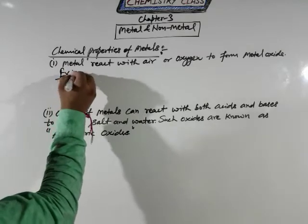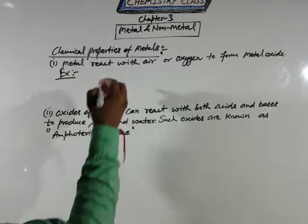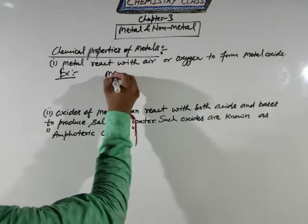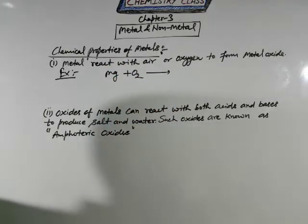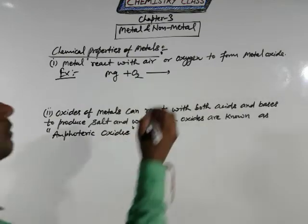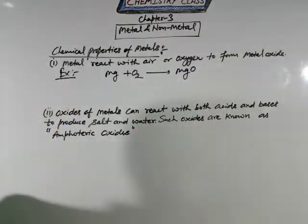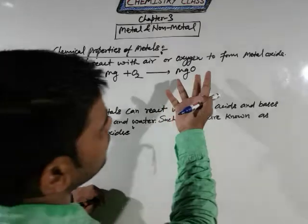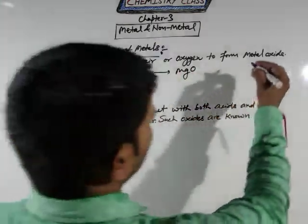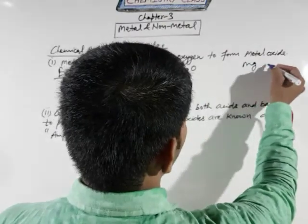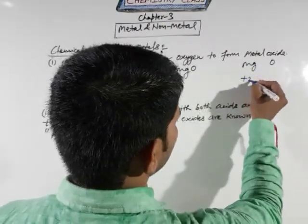Let's see an example to understand the meaning of the first point. If magnesium reacts with oxygen, what is the product? In this case, you can see it will form magnesium oxide. What is the reason for this product? See the side work here: Mg and O. Magnesium's valence is +2 and oxygen is -2.